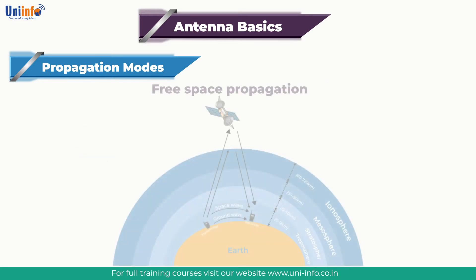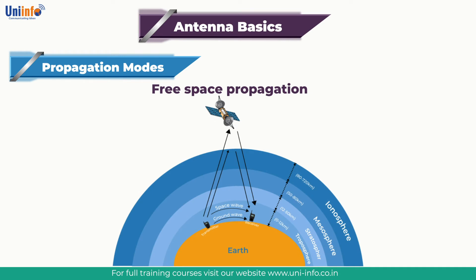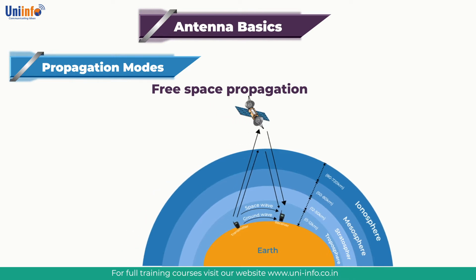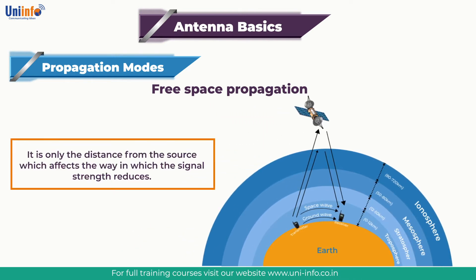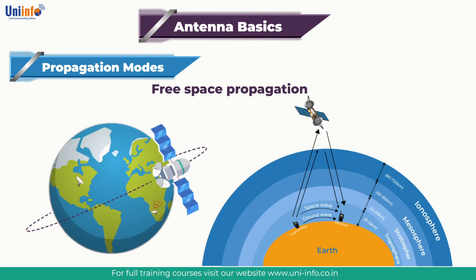Our next topic is Free Space Propagation. Here, the radio waves travel in free space or away from other objects which influence the way in which they travel. It is only the distance from a source which affects the way in which the signal strength reduces. This type of radio propagation is encountered with radio communication systems including satellites, where the signal travels up to the satellite from the ground and back down again. Typically, there is little influence from elements such as the atmosphere.